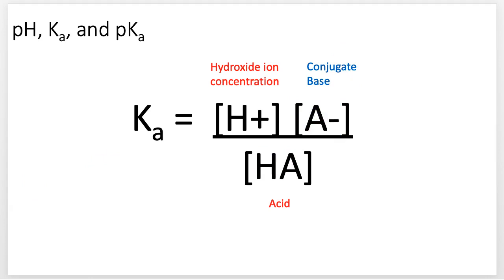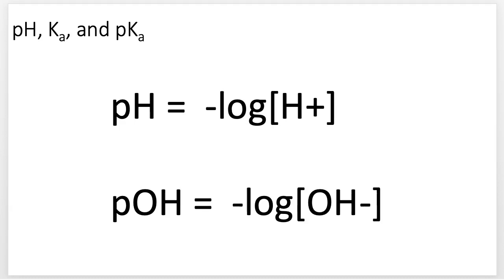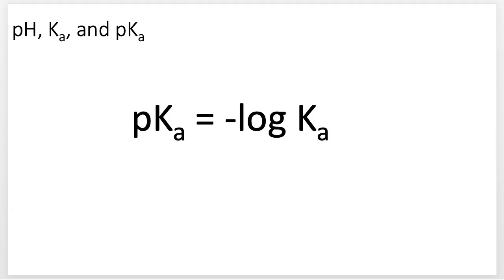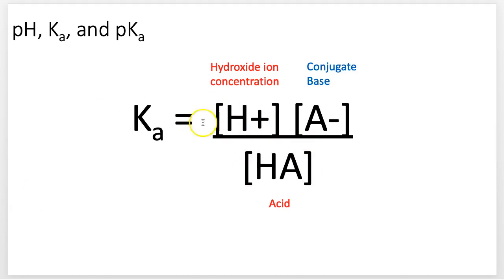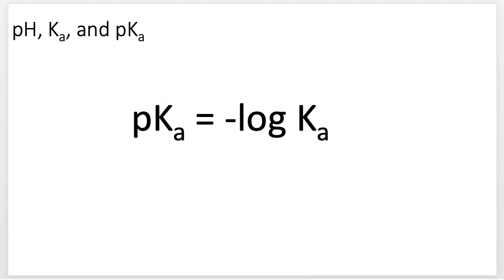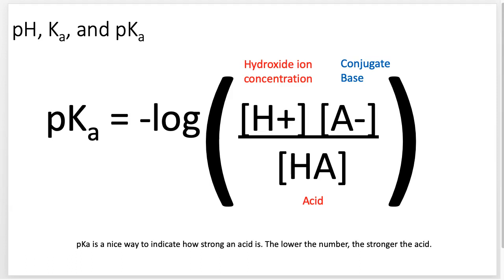So if pH means taking the negative log of something, what about pKa? You take the negative log of Ka. We know Ka is this equation, so if I take the pKa, I take the negative log of that equation — I plug it in where Ka is. So pKa means I'm taking the negative log of that expression.